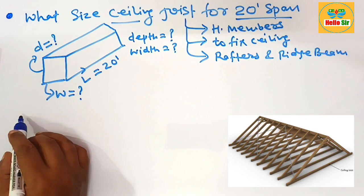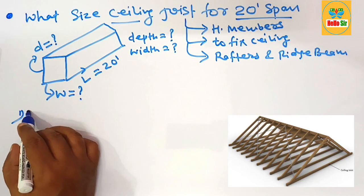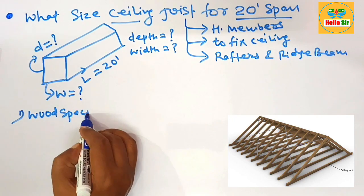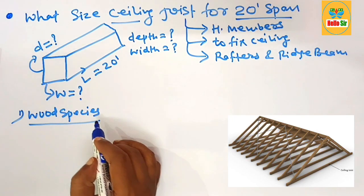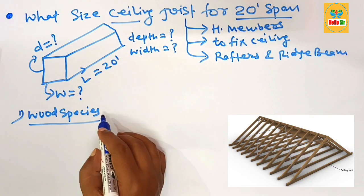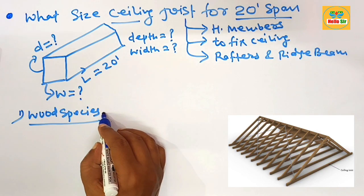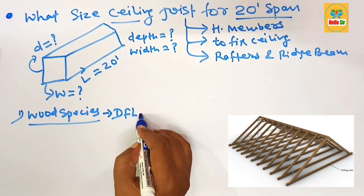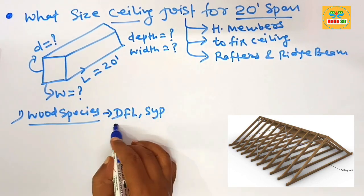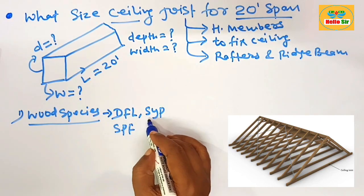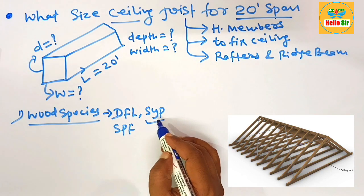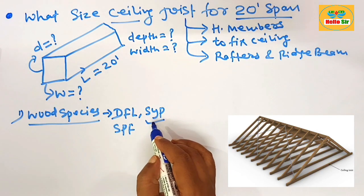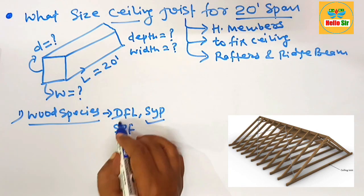The size of ceiling joist depends on many factors. The first is wood species — there are different kinds of wood species used as dimensional lumber for ceiling joists, like DFL, SYP, and SPF. Southern Yellow Pine (SYP) is the strongest wood species and can span more distance compared to other species.